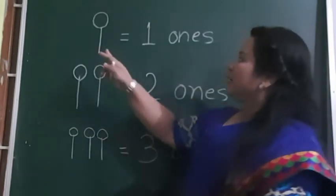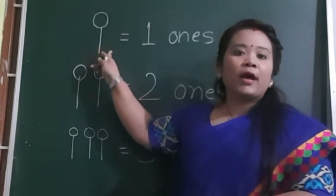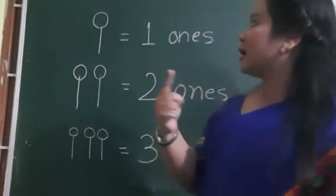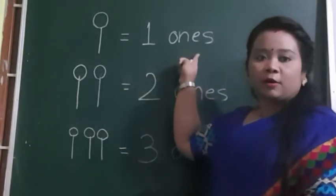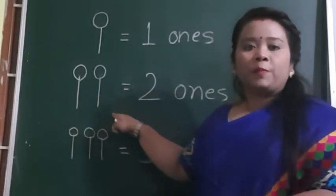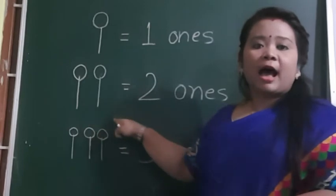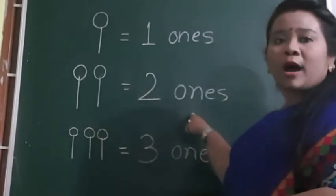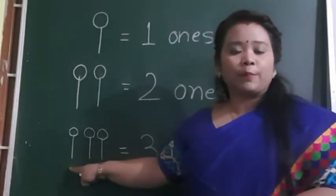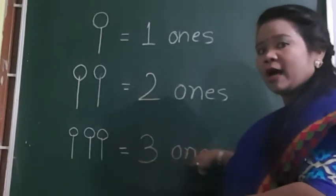Children, everybody loves lollipops! If I have one lollipop, that means one ones. If I have two lollipops, that means two ones. If I have three lollipops, that means three ones. Today we are going to learn the ones and tens concept, so I'll show you some things.